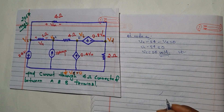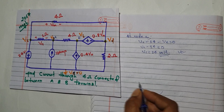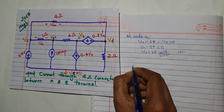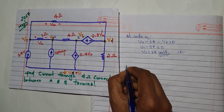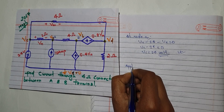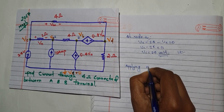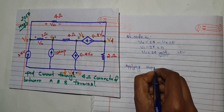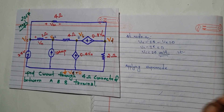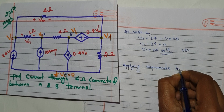So we are going to apply the super node concept. The super node is applied between nodes BB and BD. Applying KCL to the super node between BB and BD.